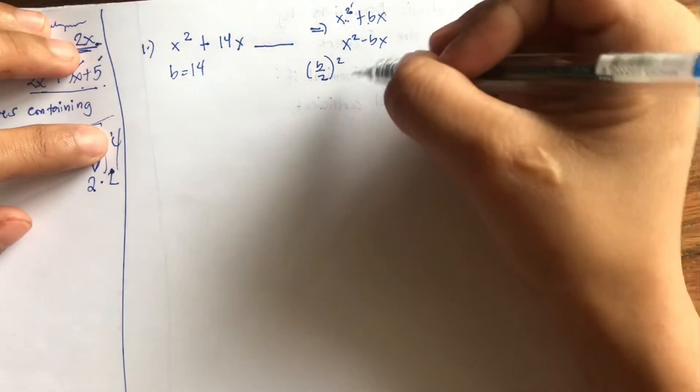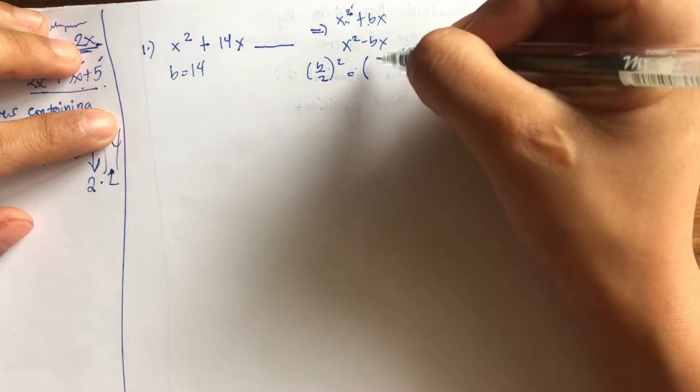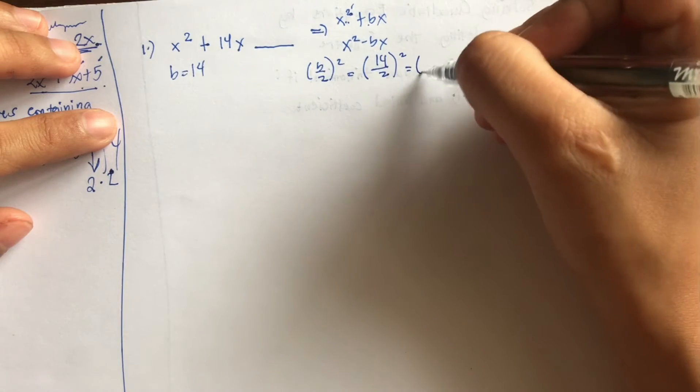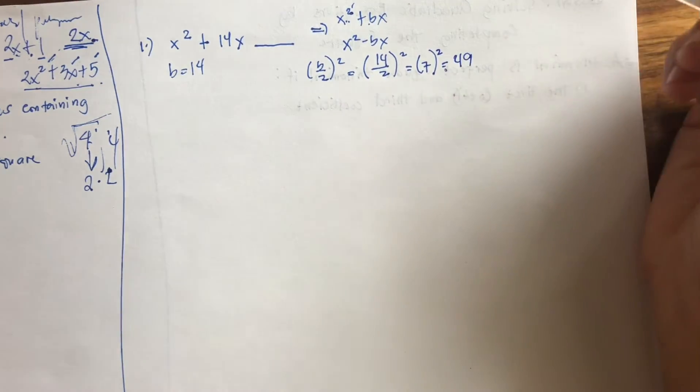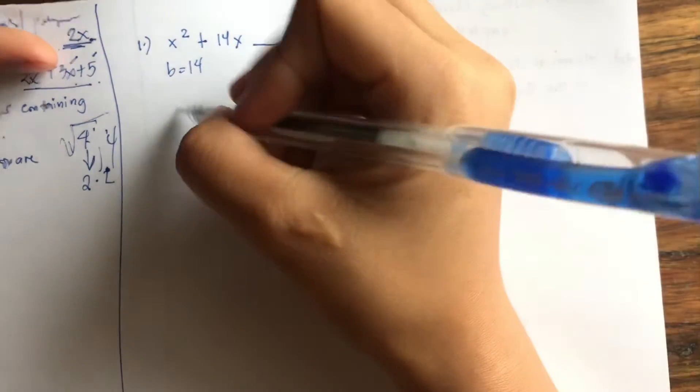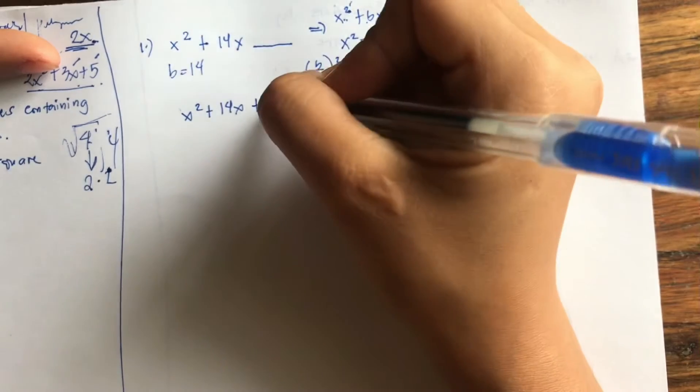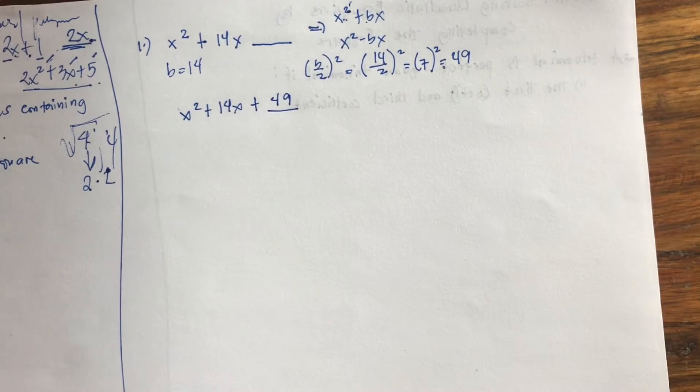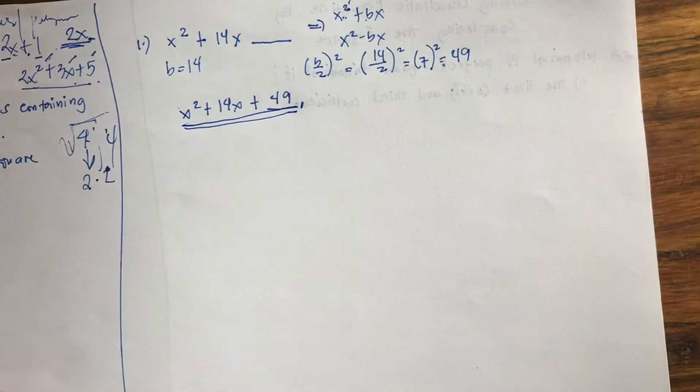Now we're going to add b over 2 squared. That is a constant term. So from here, our b is 14. Substitute that: 14 over 2 squared. So 14 divided by 2, that's 7. Now 7 squared, or 7 times 7, that is 49. So simply, this is positive 49. Add that: x squared plus 14x plus 49.